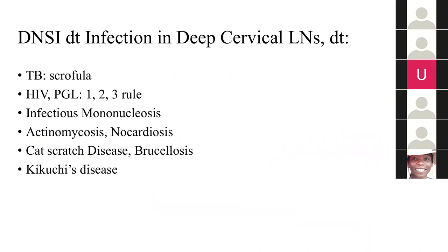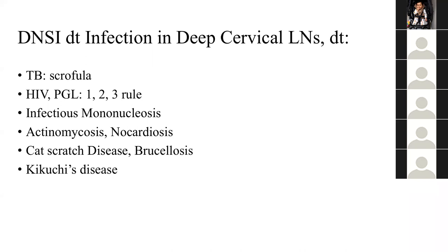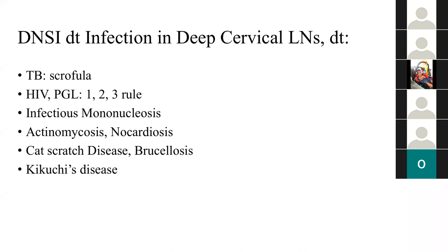Regarding deep neck space infections due to cervical lymphadenopathy, tuberculous scrofula is very common. It typically occurs in young adults, often immunocompromised, often with associated pulmonary TB or TB contacts. They tend to get multiple matted tender lymphadenopathy in levels two and five, with erythematous skin and often a discharging sinus. Importantly, if TB lymphadenitis is suspected, one should avoid incisional biopsy to prevent a permanently discharging sinus. Treatment is anti-tuberculous therapy.